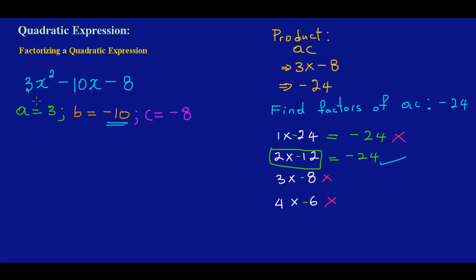Now I'll expand −10x using our chosen factors: −12x + 2x. So I rewrite the expression as 3x² − 12x + 2x − 8. Notice the middle term hasn't changed because −12x + 2x still gives us −10x.